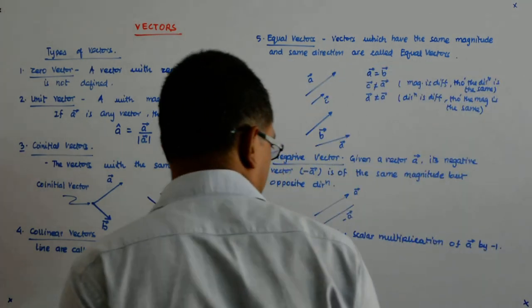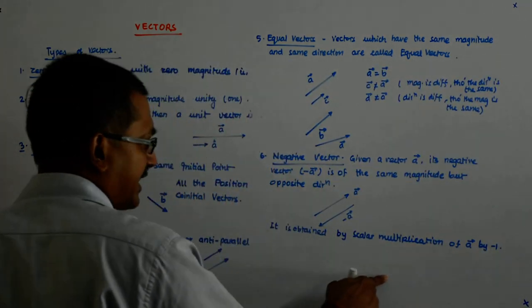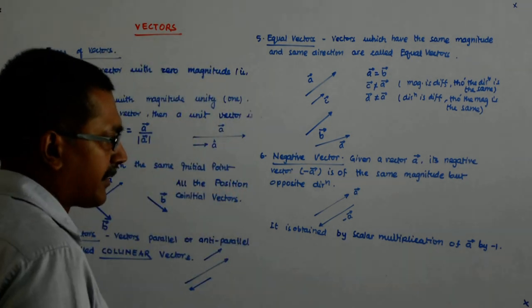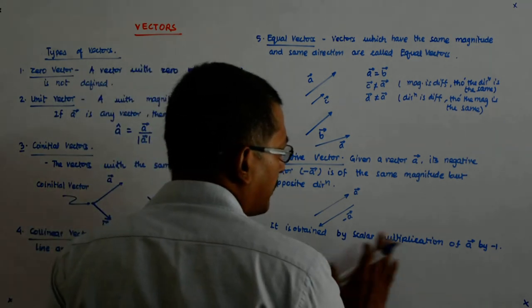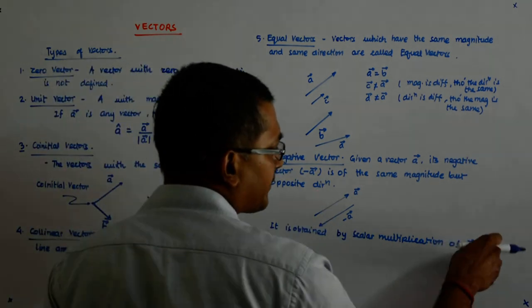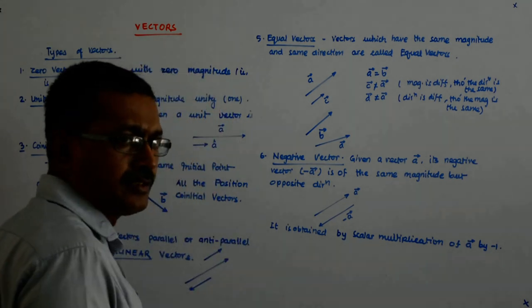Now, what happens? What is scalar multiplication that we will do next? So then you will understand it better. So if you multiply it by minus 1, what happens? The magnitude remains the same, the minus actually changes the direction.